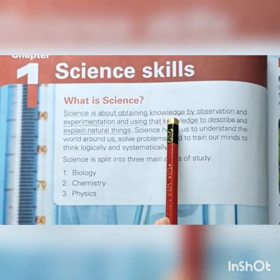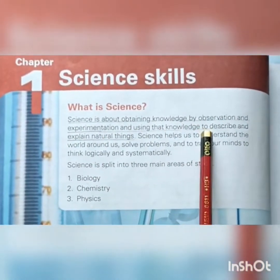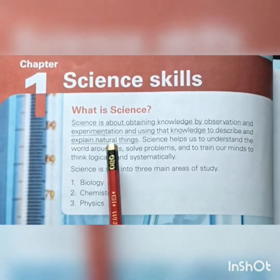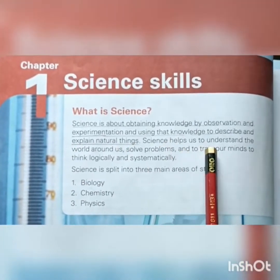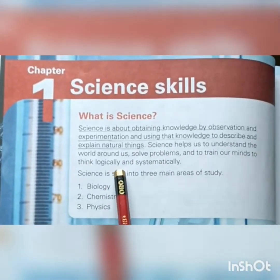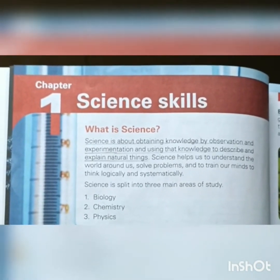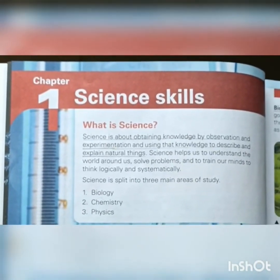What is science? Science is about obtaining knowledge by observation and experimentation, and using that knowledge to describe and explain natural things. Science helps us to understand the world around us, solve problems, and to train our minds to think logically and systematically. Science is defined as observation, identification, description, and experiment.